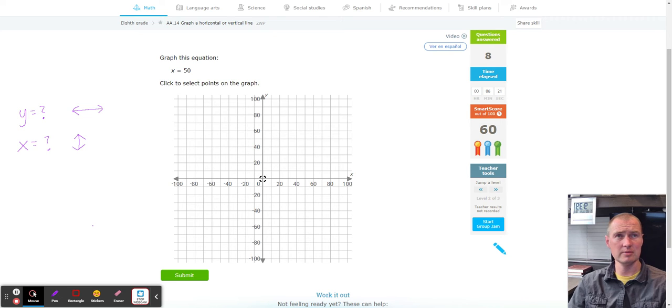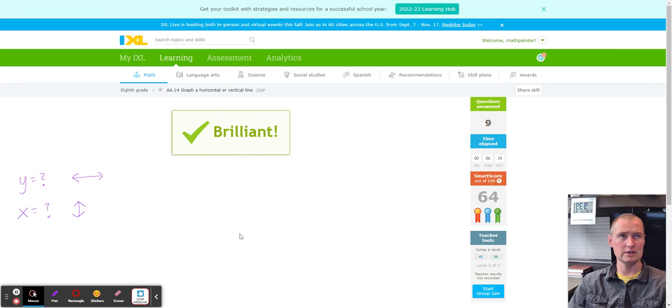So notice that each box is by tens, 10, 20, 30, 40, 50, and a line going straight up and down through 50. Now notice that 50 is not on the number line. So you have to know that 50 is exactly between 40 and 60. It's called the midpoint. So that's how we got that.